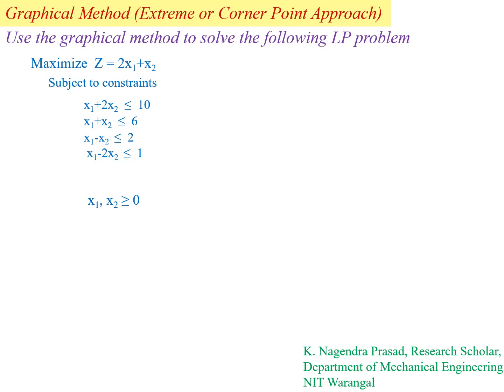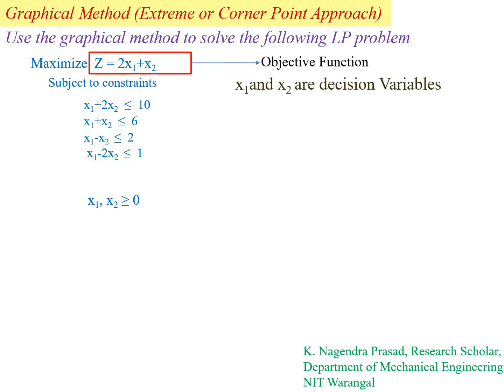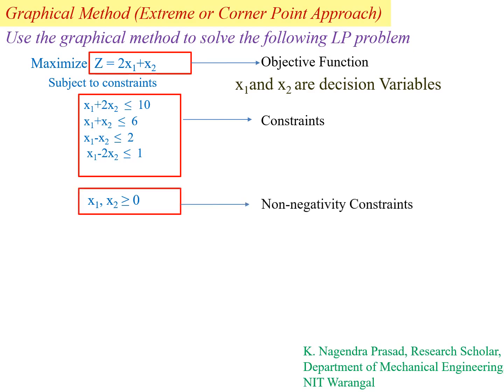Here the objective function is Z equal to 2x1 plus x2 and the decision variables are x1 and x2. Constraints are: x1 plus 2x2 less than or equal to 10, x1 plus x2 less than or equal to 6, x1 minus x2 less than or equal to 2, x1 minus 2x2 less than or equal to 1, and x1, x2 greater than or equal to 0. These are the non-negativity constraints.